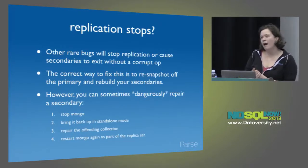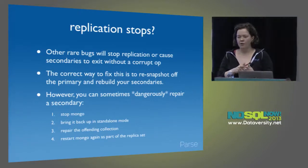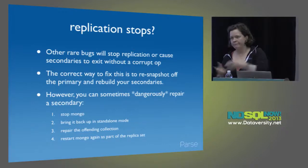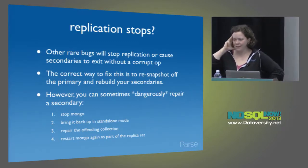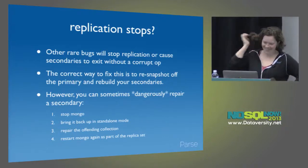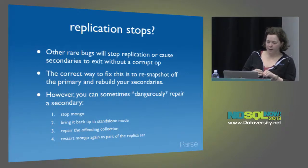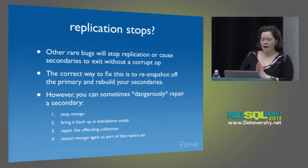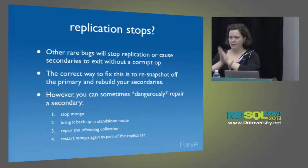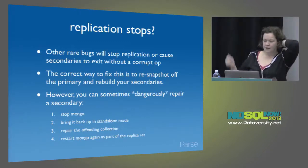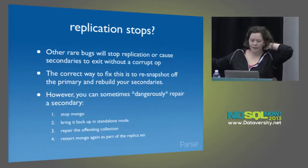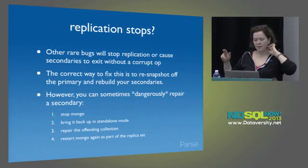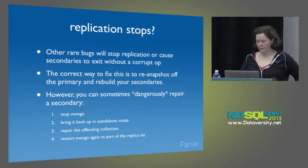There are also some situations where replication will stop — although they've mostly replaced these situations with just killing mongod instead. The correct way to fix any of these replication-style bugs is to re-snapshot off the primary and rebuild all your secondaries. You can dangerously fix the problem if you're willing to slightly mess with your consistency: stop the secondary, take it out of the replica set by commenting out that line in mongod.conf, bring it back up, do whatever you need to do to repair the collection, and then bring it back up inside the replica set. Buyer beware — you're really not supposed to do this, but if it's that or an eight-hour downtime, sometimes I will.